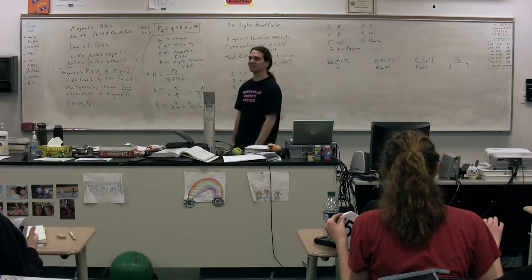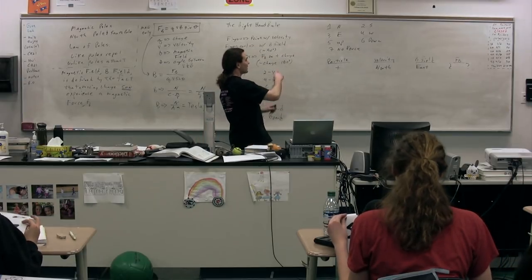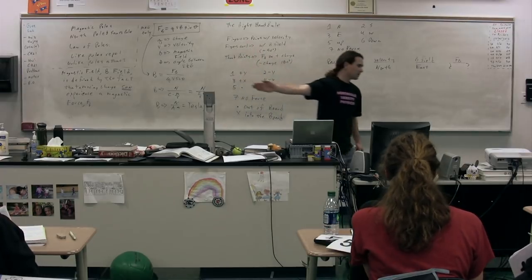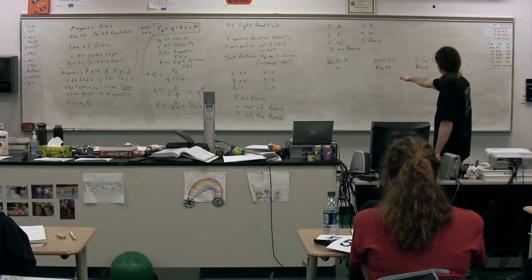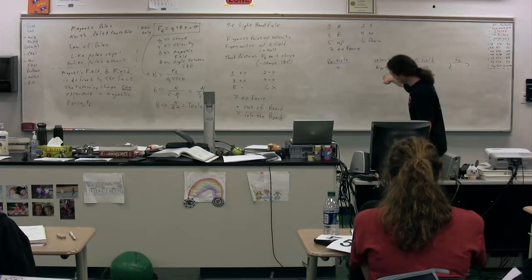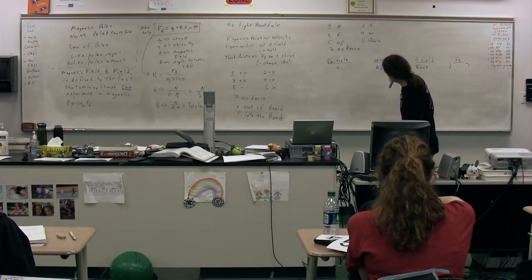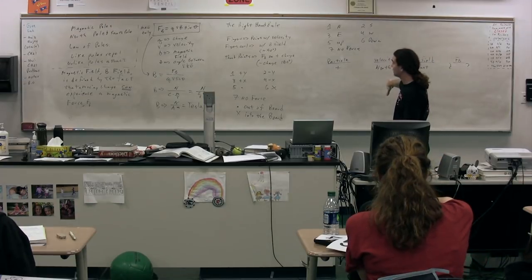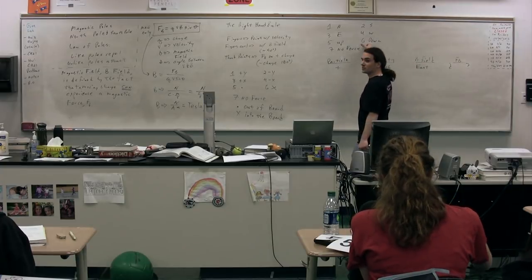Alright, we have our cardinal directions. Here we go. The velocity is north, so we point north. The direction of the magnetic field is east, so we curl our fingers east, and our thumb points, class, down, which is 6.